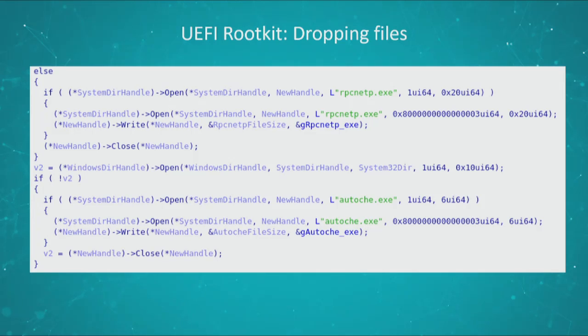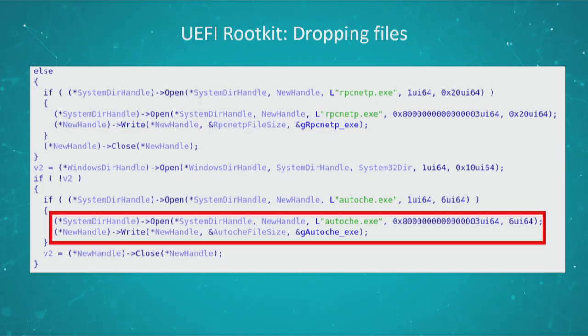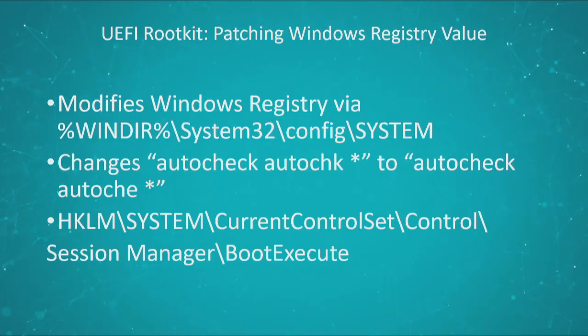Here's the code responsible for dropping the two files: we have the code dropping RPCnetP.exe, and here the code dropping autochi.exe. Finally, it will patch a value in the Windows registry. How it does that is it will open the file backing the HKLM\SYSTEM registry hive. It doesn't have all the logic to parse Windows registry structures, so what it does is look for a textual pattern — 'autocheck autochk *' — and when it finds it, it will change it to 'autocheck autochi *'. It happens to be modifying the boot execute key that Julian spoke about earlier.